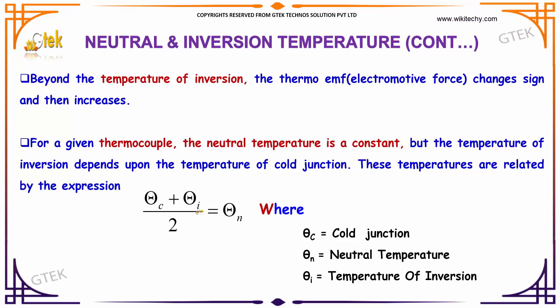These temperatures are related by the formula: (θ_c + θ_i) / 2 = θ_n, where θ_c is the cold junction temperature, θ_n is the neutral temperature, and θ_i is the inversion temperature.